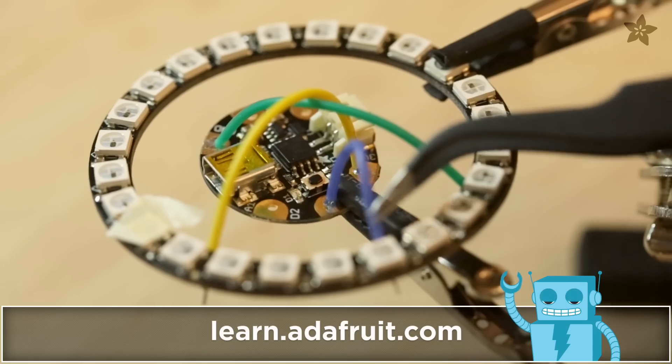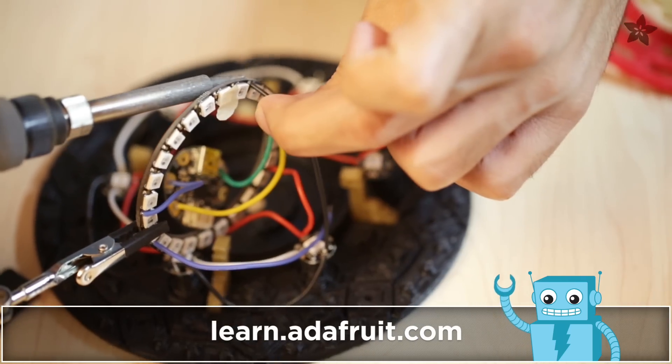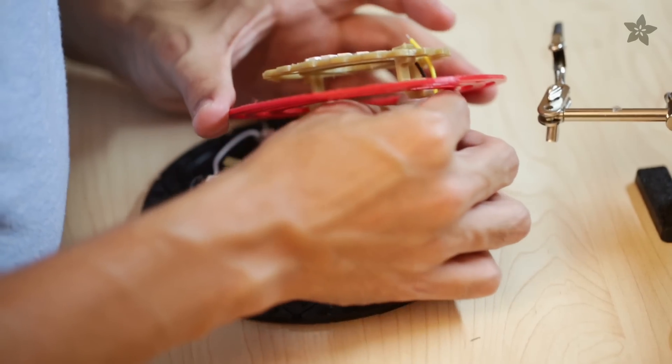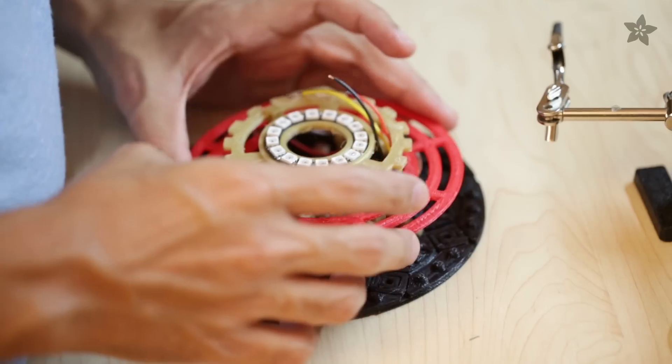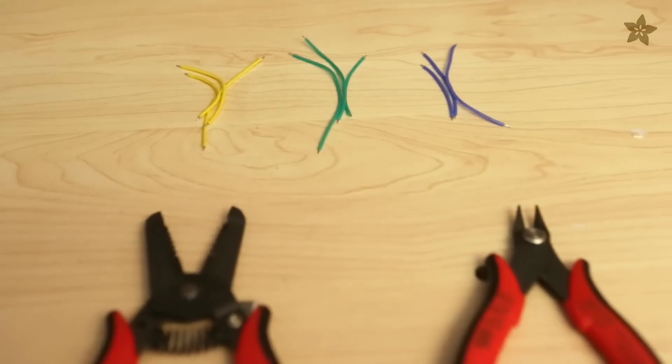Be sure to check out our guide on the Adafruit Learning System to follow along with the circuit diagram so you can build one at home. You can also find the link in the description below. Silicone-coated wires are great for these types of projects because they offer that extra flexibility. Some 26 to 30 gauge wires work best here.